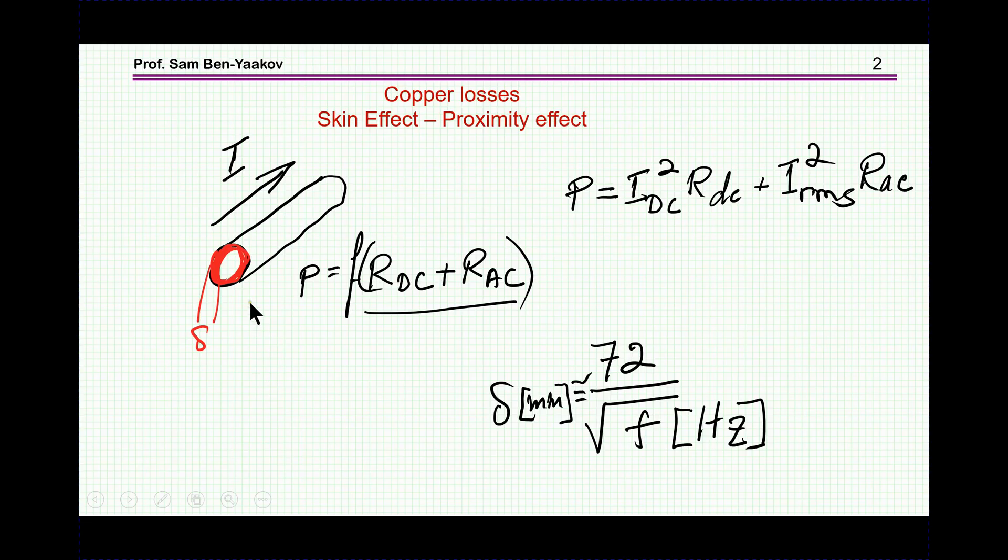The skin effect is when the carriers, the electrons in the case of a conductor, are pushed to the outer brim of the wire. So therefore the cross-section area, the effective area available for conduction is smaller and therefore the resistance would be higher.